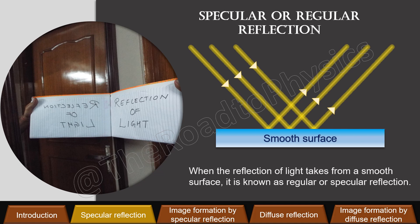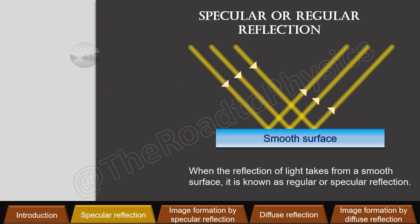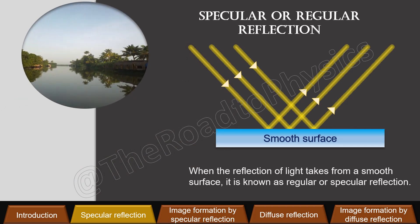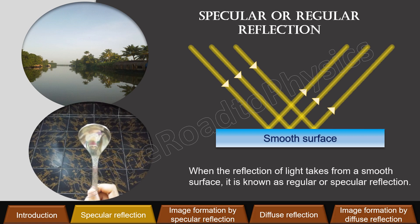Can you think of any other smooth surface that causes specular reflection? Reflection from still water gives such clear images. Reflection from metallic surfaces also shows regular reflection. You can look for your image in a metal spoon or a metal plate to find out.